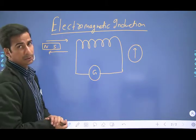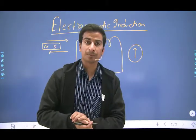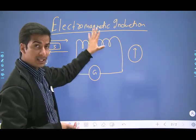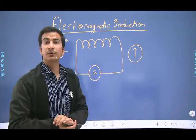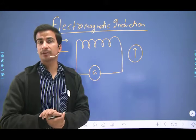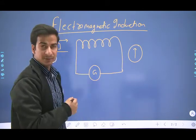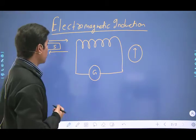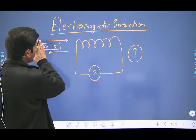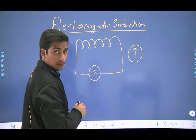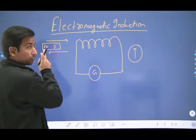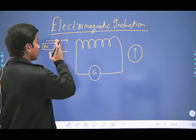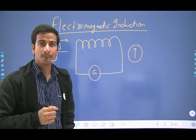The question is: where does this current come from? There is a simple answer. These conducting coils always contain some free electrons. Lekin potential difference ki absence mein ye free electrons random motion karte rehte hain, kisi ek specific direction mein motion nahi karte. When you bring the south pole near the coil, you are doing some work, and this work is actually stored as electrical energy inside the coil.